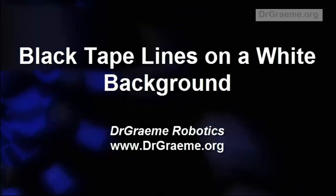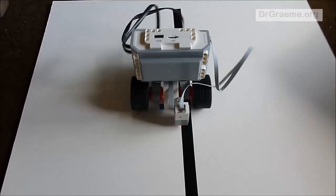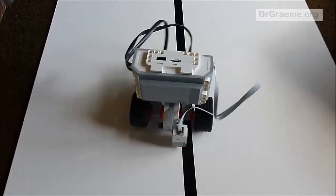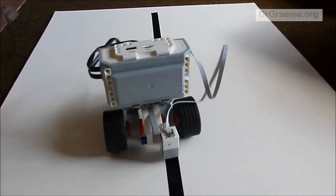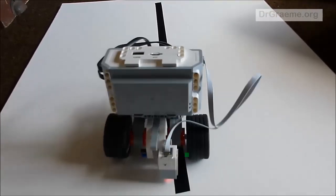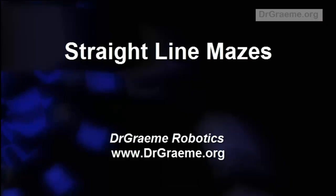We can also use black tape on a white background. Our robot will follow the line just as it will on a white tape line, but it will follow the other side of the line. If we have a more complicated maze, we'll probably want to put it on something more permanent than carpet.